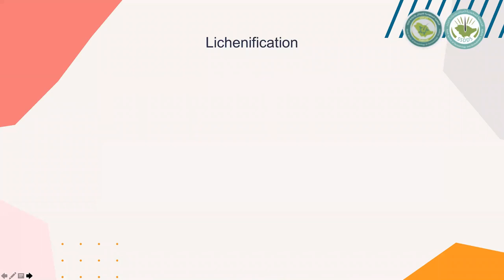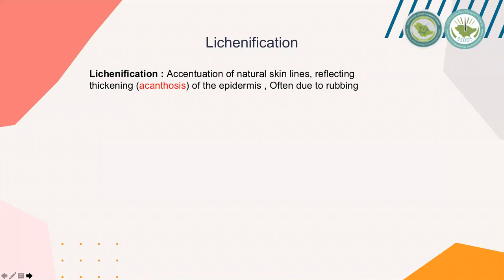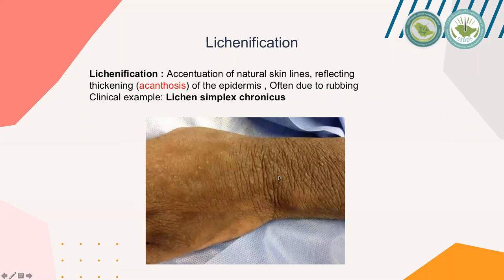Lichenification is an accentuation of the natural skin lines, meaning they become more prominent, reflecting acanthosis of the epidermis. Acanthosis means thickening of the epidermis due to thickening of the stratum spinosum layer, often due to rubbing. A clinical example is lichen simplex chronicus. We can see the accentuation of the natural skin lines over the wrist skin of the left hand.